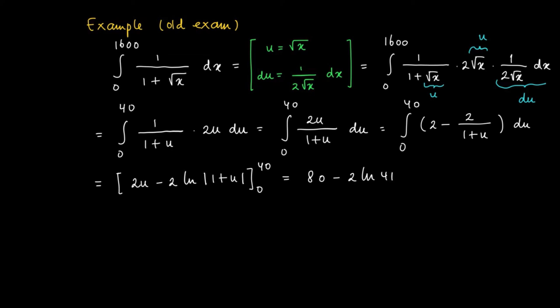So we evaluate this primitive in the boundary values 0 and 40. Then we get 80 minus 2 times the natural logarithm of 41 minus, plug in the 0. So we get 2 times 0 minus 2 times the natural logarithm of 1, which equals 0.